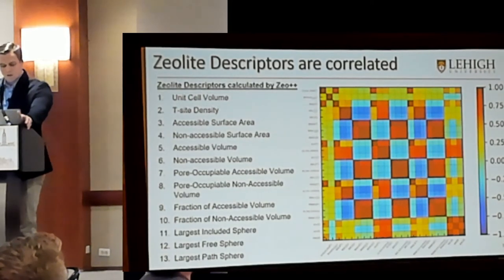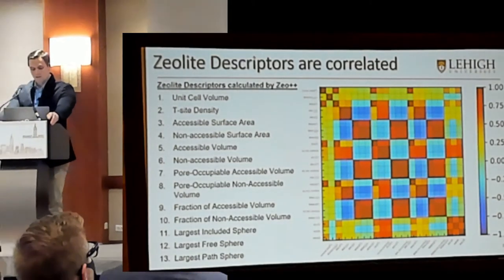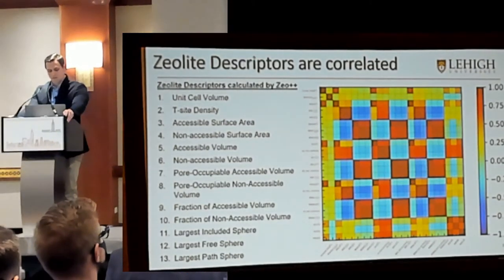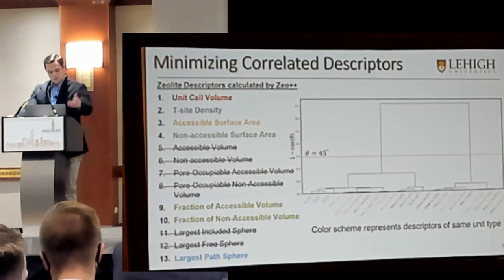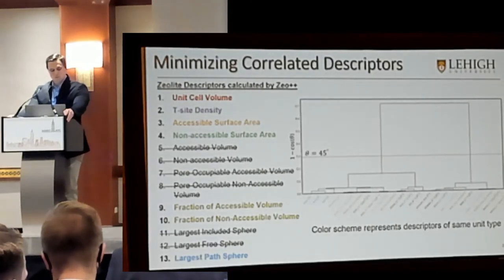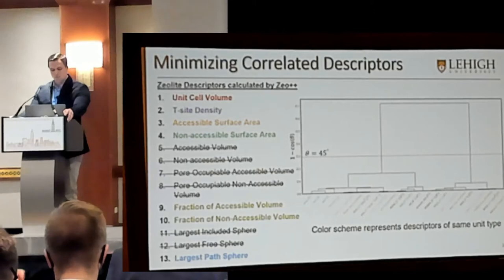We performed the same type of analysis for our zeolite descriptors. Here are the types of descriptors calculated from Zeo++, and as you can see, some of these are highly correlated — they're also inversely correlated. To limit the number of descriptors, we again performed hierarchical clustering. The ones that are crossed off were not used within the artificial neural network, and those that remain are highlighted in different colors representing different unit types.